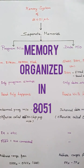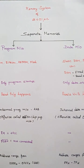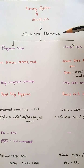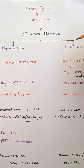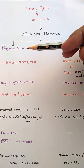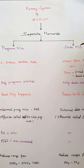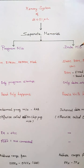Here we discuss the memory system of the 8051 microcontroller. Generally, the 8051 uses separate memories for program storage and data storage. Program memory contains only the program, and data memory contains the data required for manipulations — like variables, constants, or intermediate results that can be stored there.